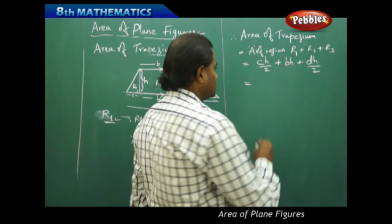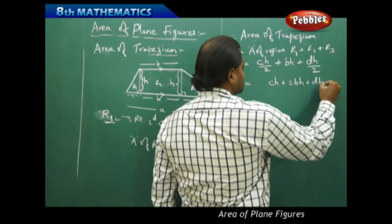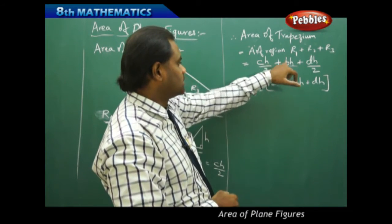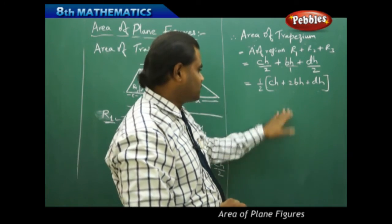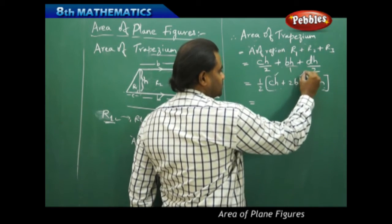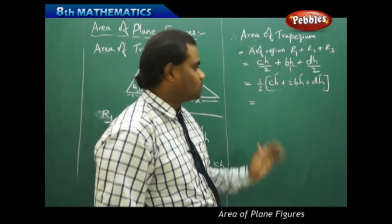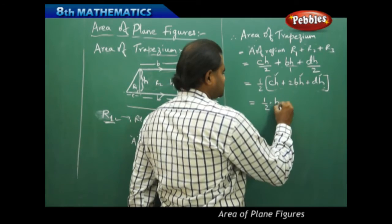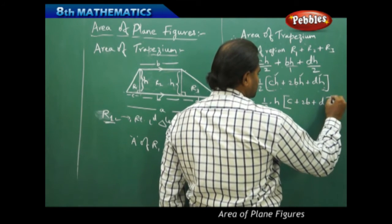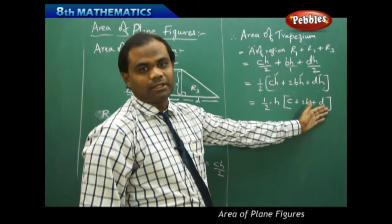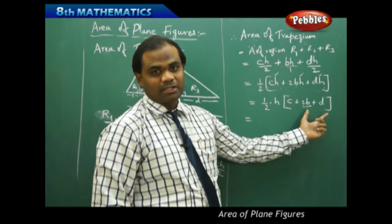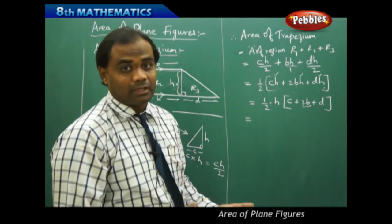Taking the LCM, I get CH plus 2BH plus DH, all over 2. Taking H common from all three terms, I get H times (C plus 2B plus D), all over 2. Then splitting 2B into B plus B, we can identify A from that, giving us the standard formula for the area of a trapezium.